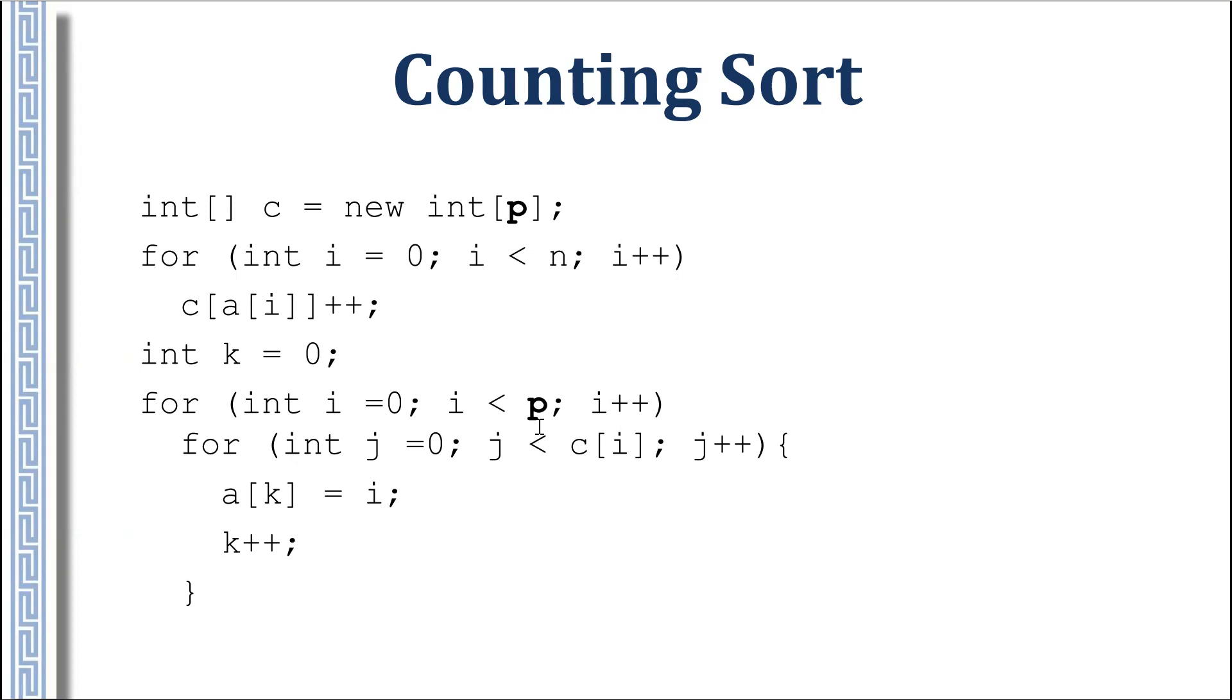You can use this idea not only for the case when the numbers are from zero to p minus one, but if you have some restrictions, p is the difference between maximal possible value and minimal possible value. For example, you know that all numbers are from billion to billion ten. There are only 11 possible values. In that case, you can use this counting sort algorithm, and p is 11. You don't need to have billion ten as a value of p. It is enough to have p equals 11 and you put here i from billion to billion ten plus one.